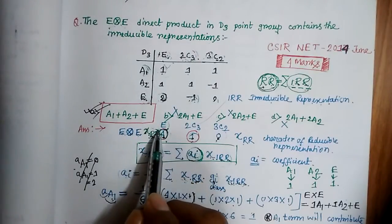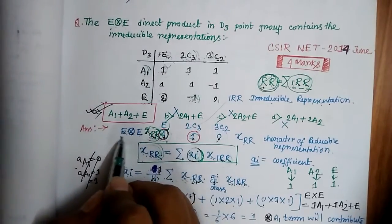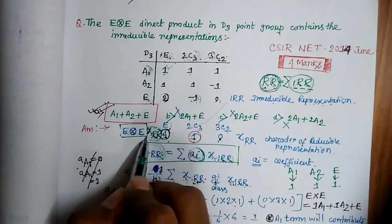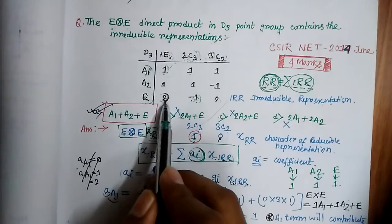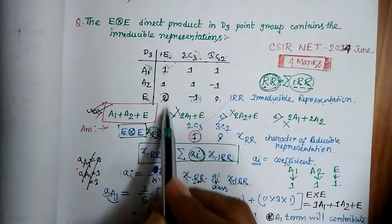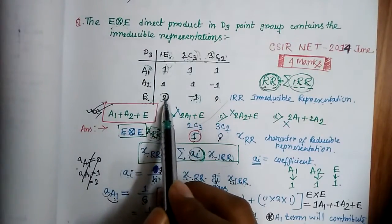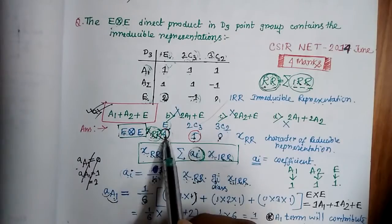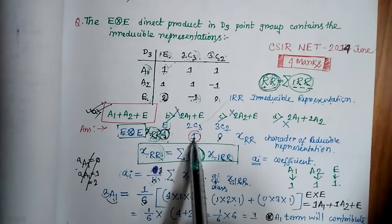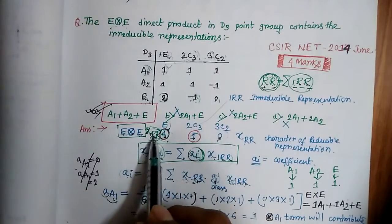To get the character of the reducible representation of E cross E, multiply the characters of the E irreducible representation for each symmetry element. For symmetry element E: 2 × 2 = 4. For C3: (−1) × (−1) = 1. For C2: 0 × 0 = 0. So the characters of the reducible representation χ(RR) are 4, 1, 0.